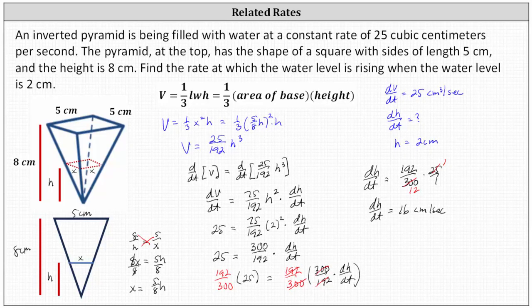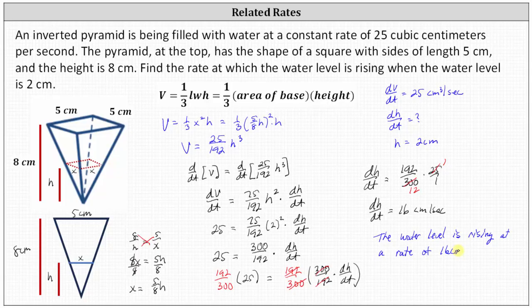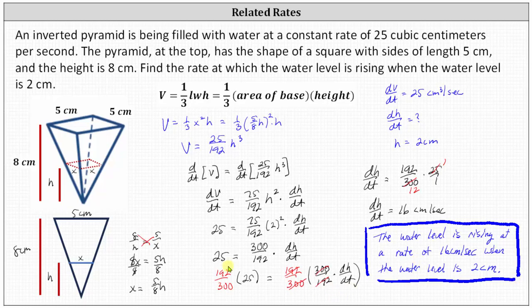Let's write this as a complete sentence: the water level is rising at a rate of 16 centimeters per second when the water level is 2 centimeters. I hope you found this helpful.